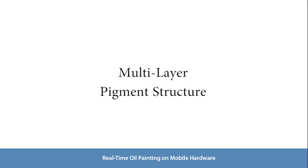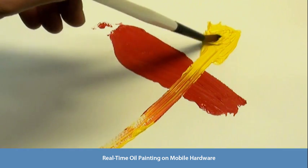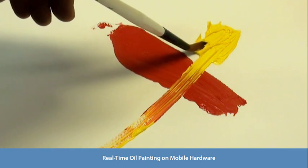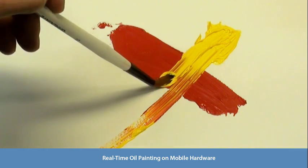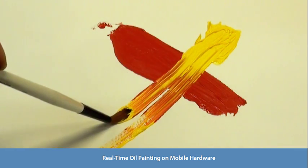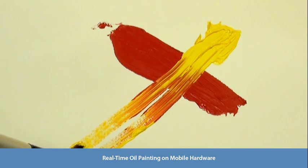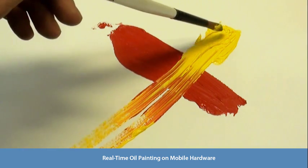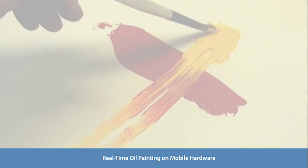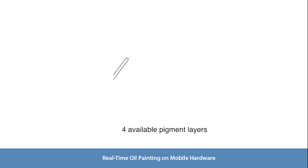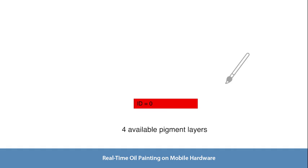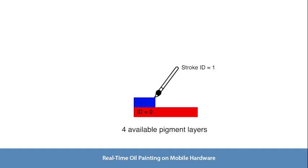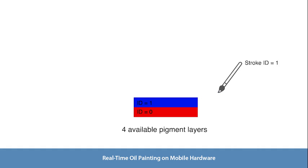Different layers of paint can be applied on top of each other, creating complex three-dimensional paint structures. Because of the peculiar nature of folding, marbling and mixing in oil paint, we propose a multi-layer structure of vertically stacked pigments. Every stroke has a unique ID. Pigment layers are stacked when applied by different brush strokes.